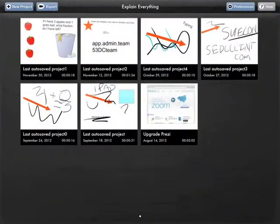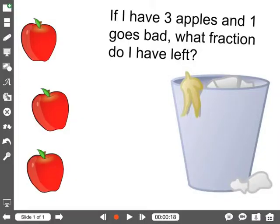So first, let's jump into Explain Everything and let me show you a sample project that I already have set up. So the setup is here. If I have three apples and one goes bad, what fraction do I have left? With Explain Everything, you can actually record this as a video using that record button right there that the arrow is pointing to.